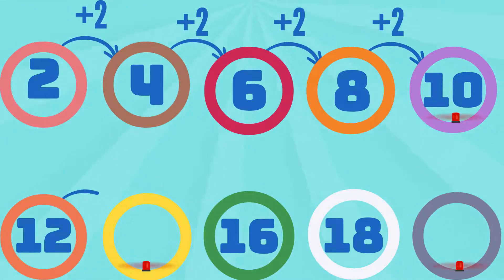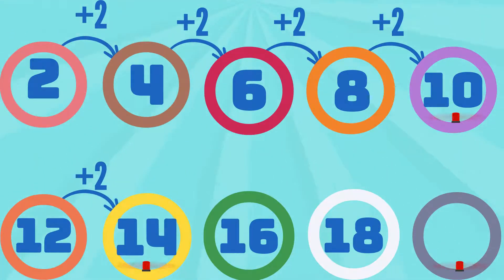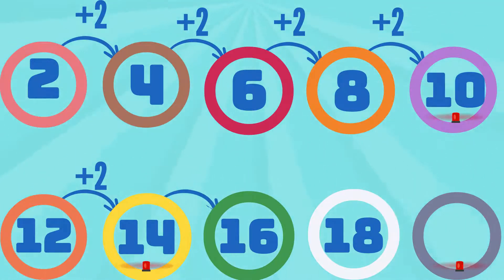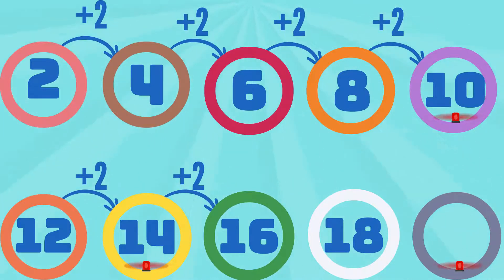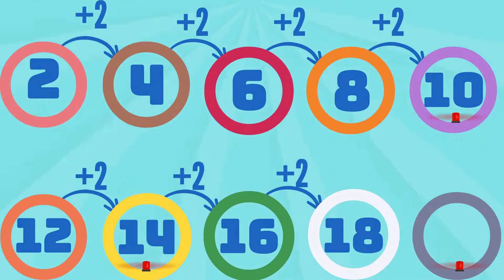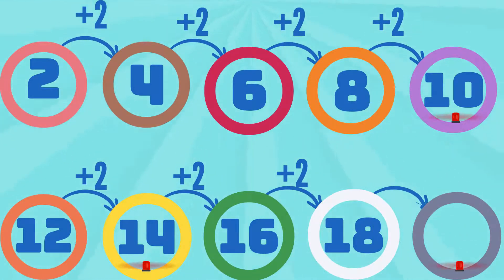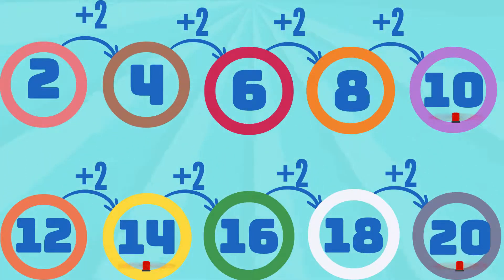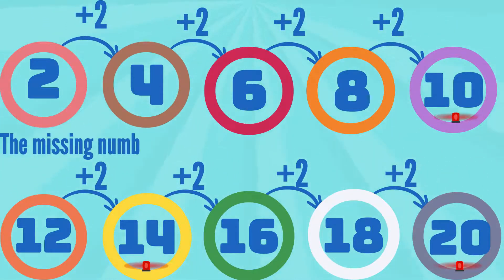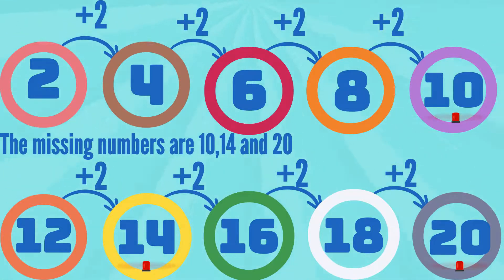Continuing: 12 plus 2 equals 14. 14 plus 2 equals 16. 16 plus 2 equals 18. 18 plus 2 equals 20. So, the missing numbers are 10, 14, and 20.